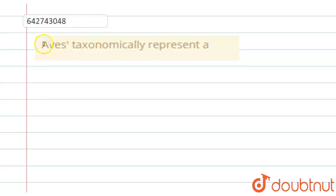Question is, Aves taxonomically represents A. So in this question, we need to determine that Aves taxonomically represents A. Aves are the class and this class Aves belongs to the kingdom Animalia and Phylum Quadrata.